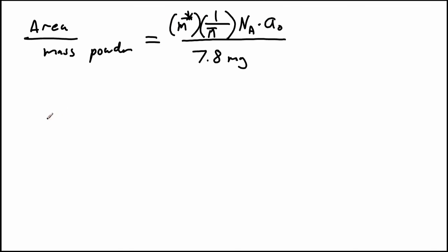So let's do that. So the max mass we said was 0.53 milligrams. It's the maximum mass of carbon monoxide that could stick to the surface. We're going to divide by the molar mass of carbon monoxide, which we know is going to be 28 grams per mole.